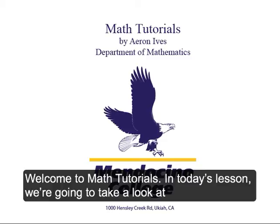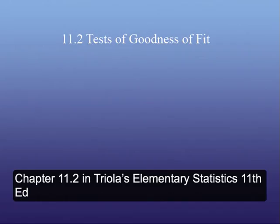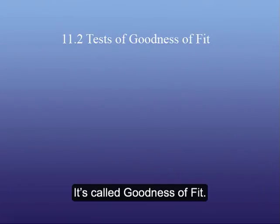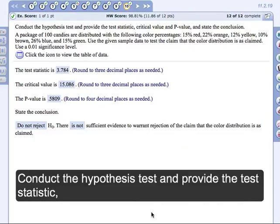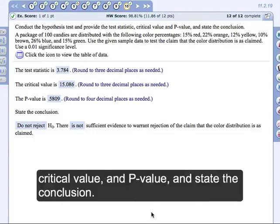Welcome to Math Tutorials. In today's lesson, we're going to take a look at Chapter 11, Section 2 in our Triola's Elementary Statistics book. It's called Goodness of Fit, and the problem we're going to look at is the following: conduct the hypothesis test and provide the test statistic, critical value, and p-value, and state the conclusion.